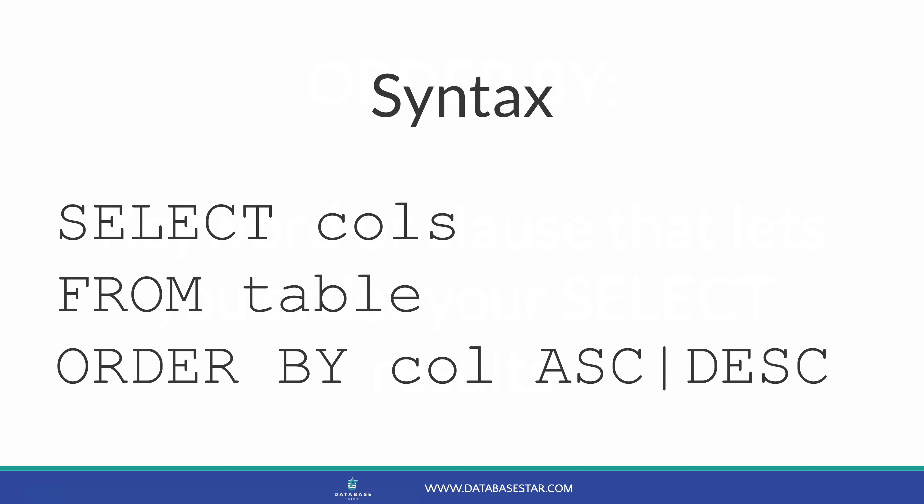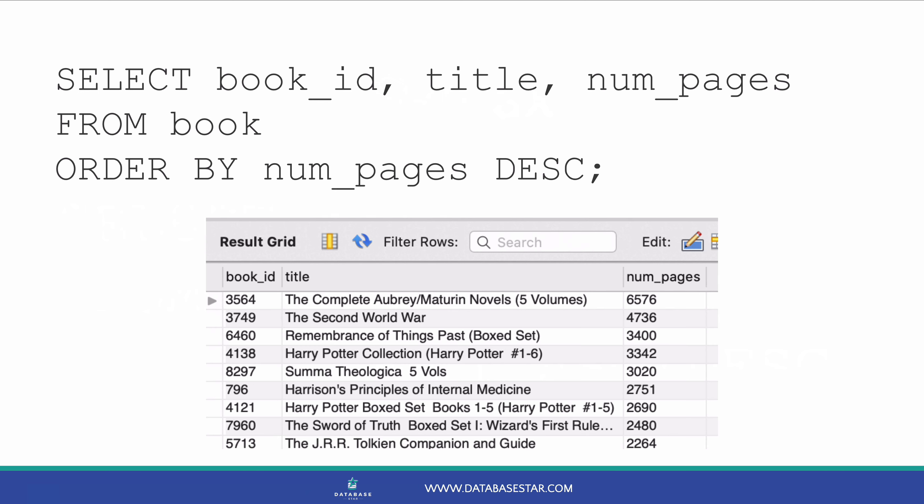To order your SELECT query, you add the words ORDER BY to the end of your query. You then specify the columns that you want to order by, and whether you want the data ordered in ascending or descending order. You can order by more than one column as well, which is helpful if there are ties when ordering by the first column. Here's an example of a query that uses an ORDER BY — it selects data from the book table and orders by the num_pages column in descending order, showing all books from those with the most pages down to those with the least.